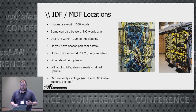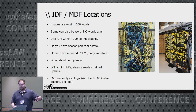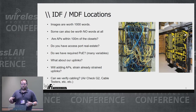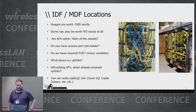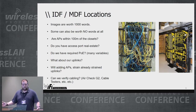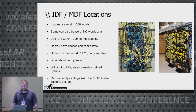What about adding additional APs — is that going to strain already strained uplinks? How many of you do some type of NetFlow or SNMP collection of uplinks whenever you do wireless deployments? Good. Check cabling — use something like Airtrack G2 to make sure the cabling is good. Those are all important things.